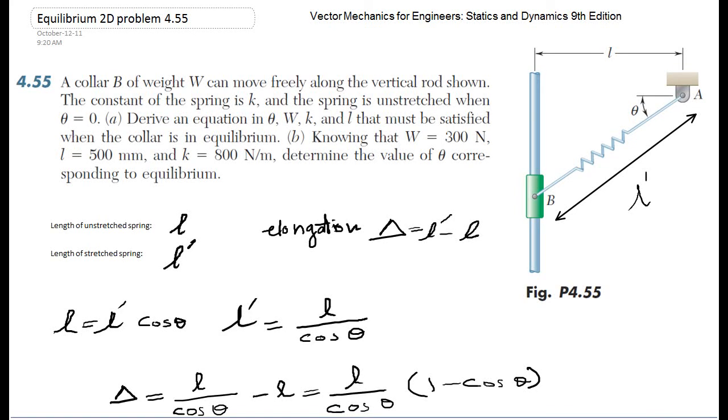I'm solving part A of problem 4.55. Collar B is moving vertically along the rod, and the spring is unstretched when it's at the horizontal position. In other words, the spring is unstretched when theta equals zero.